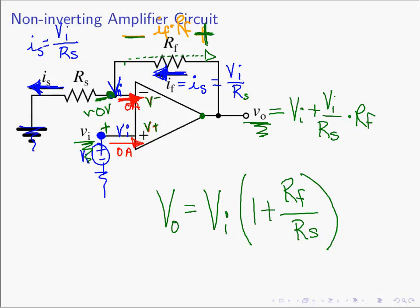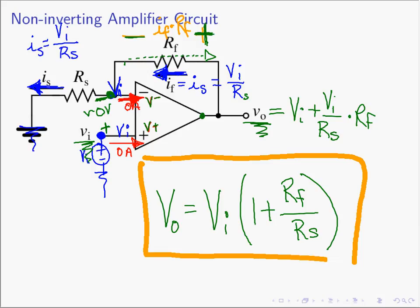If you stop and look at this result for just one moment, you'll see some interesting things. First of all, notice that in this formula there is no negative sign, like we saw with the inverting amplifier circuit. So if the input voltage VN is a positive number, the output voltage is also going to be positive. If the input voltage is negative, then the output voltage will also be negative. The signs of the input and output are going to be the same — hence the name. It's the non-inverting amplifier; it does not flip the output relative to the input.